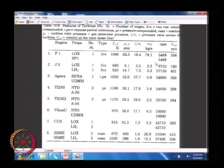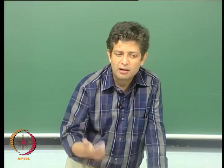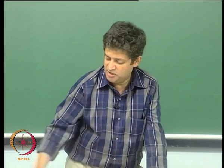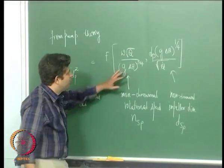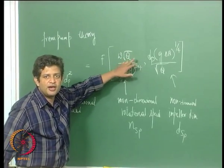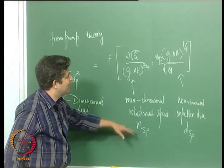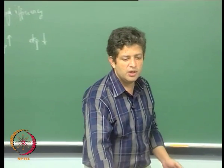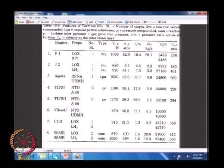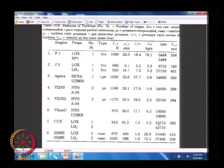We said that diameters need to be small and rotational speed needs to be as large as possible. If D_sp needs to be small and N_sp needs to be large — for a fixed flow rate and pressure head, the only way you can get a high N_sp is by increasing the rotational speed. If you look at the numbers here, for LOX-hydrogen systems they are rotated at very high speeds, something in the range of 40,000 RPM — very, very high RPMs.